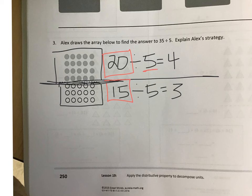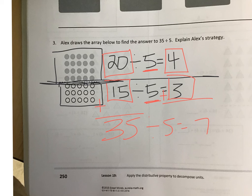Both 20 and 15 can be divided by 5. And so if you add those two up, you get 35. And if you add up your two answers, 4 plus 3 equals 7. So the kids need to explain Alex's strategy. All they need to say is Alex used the distributive property.